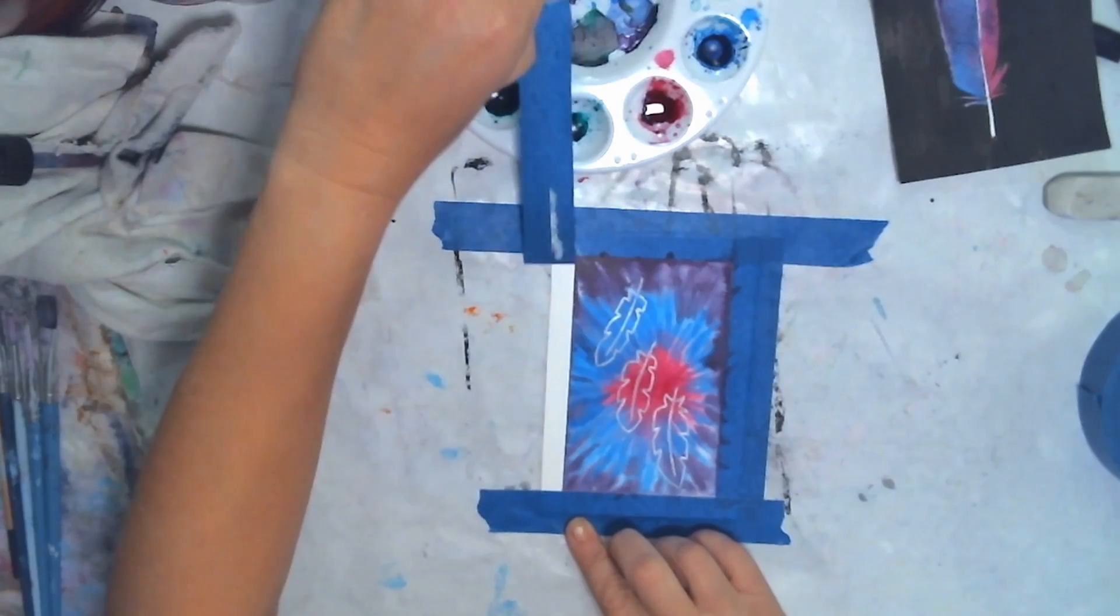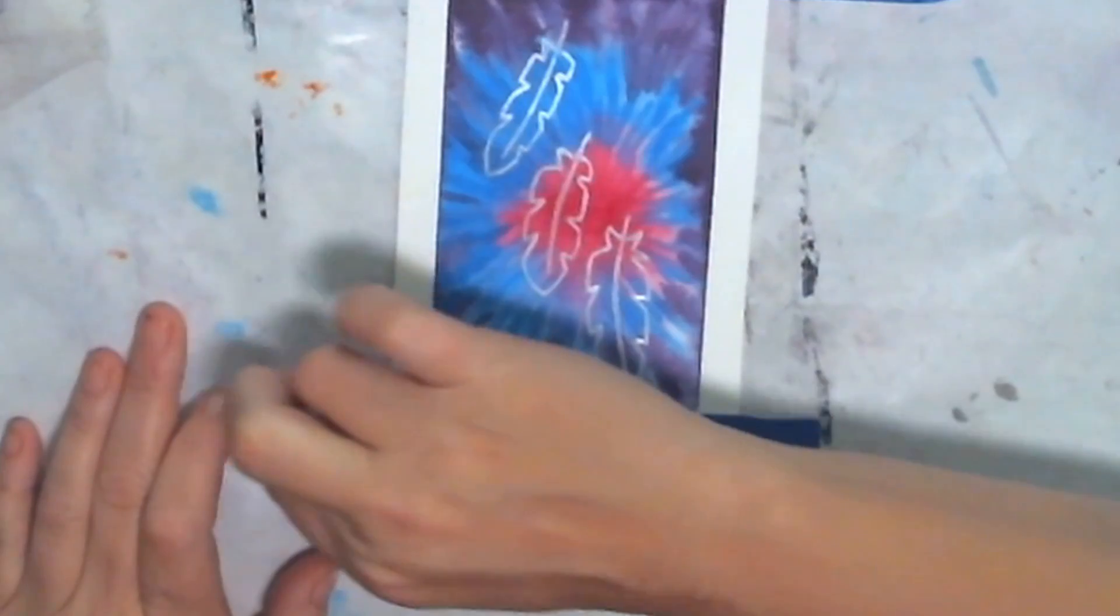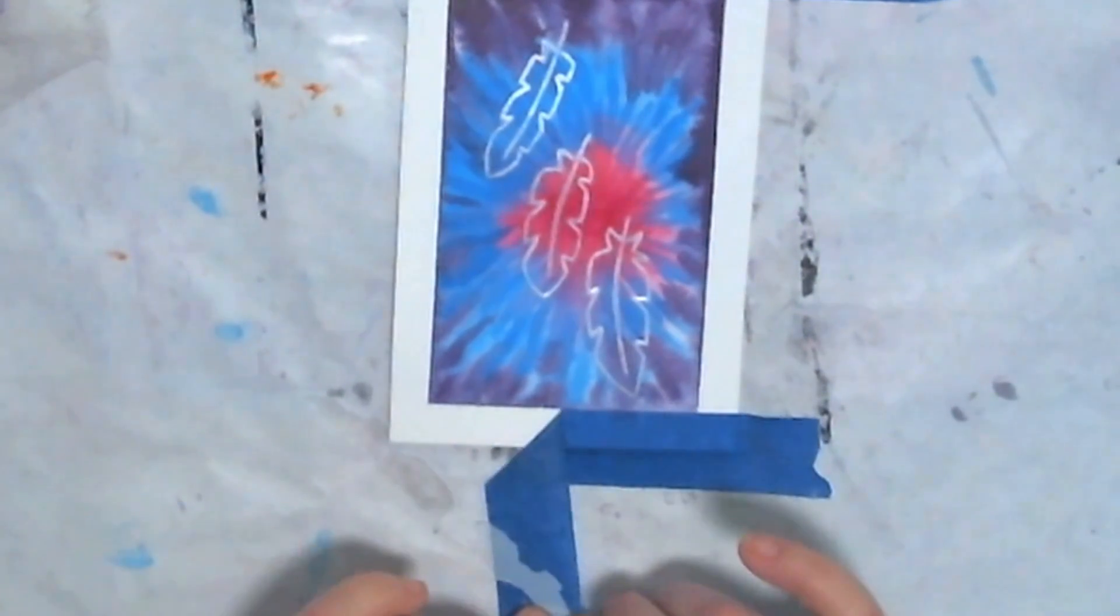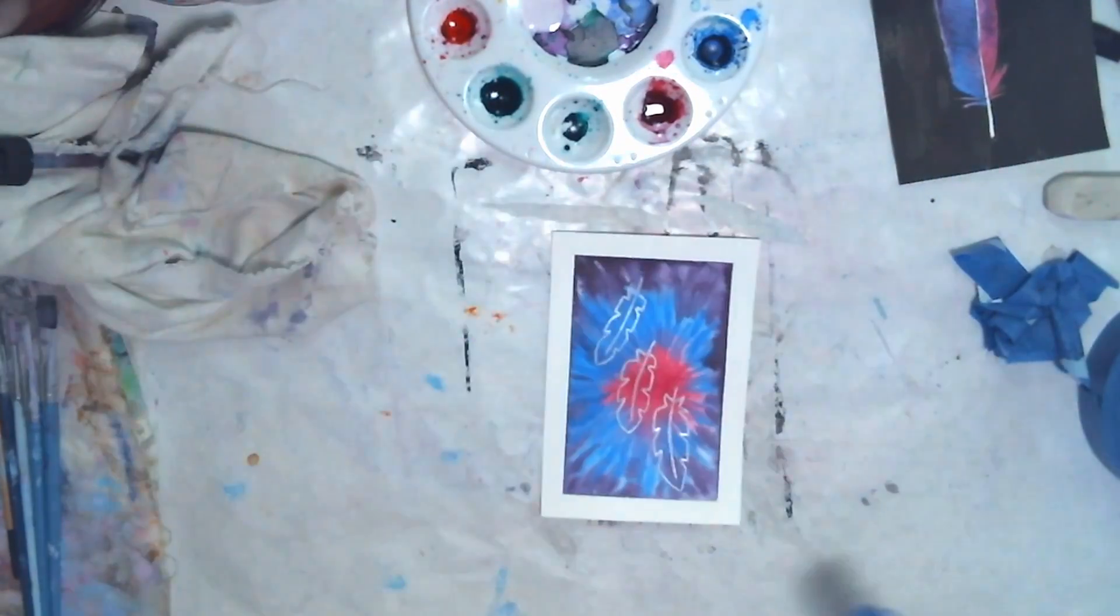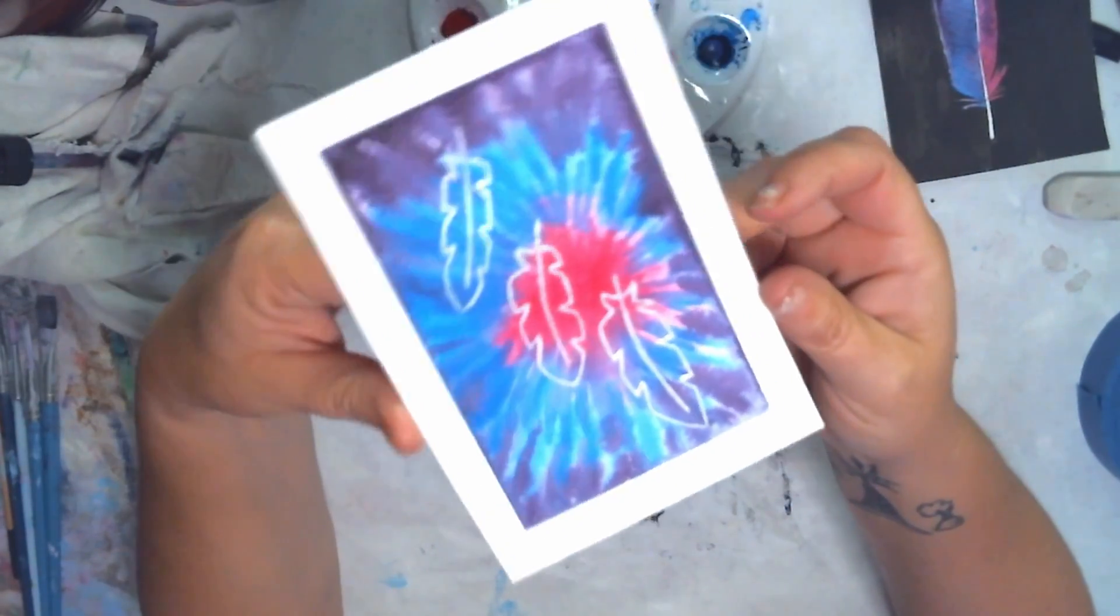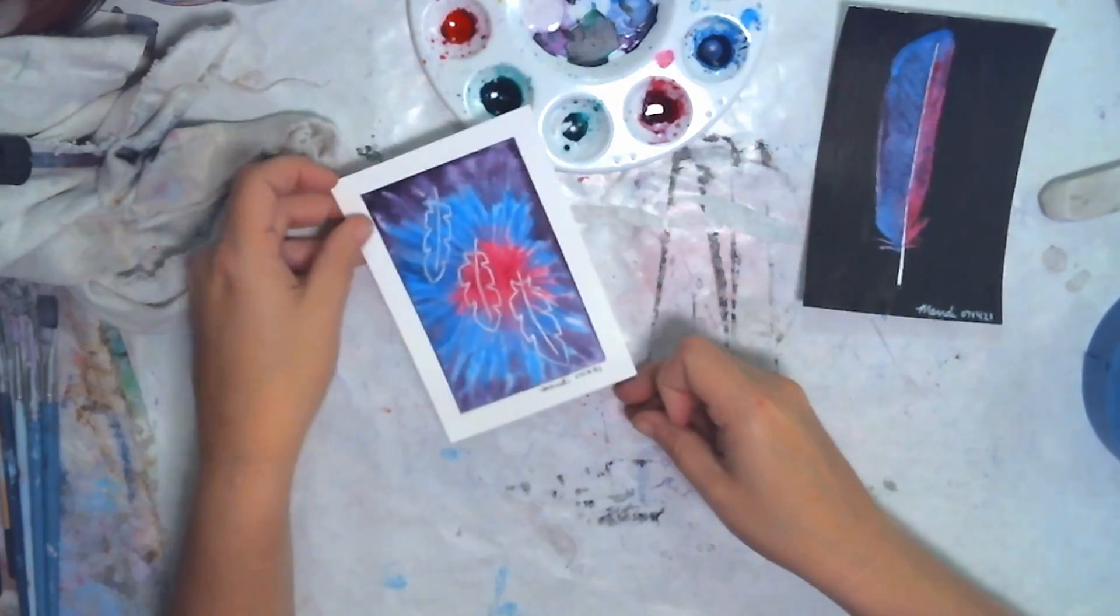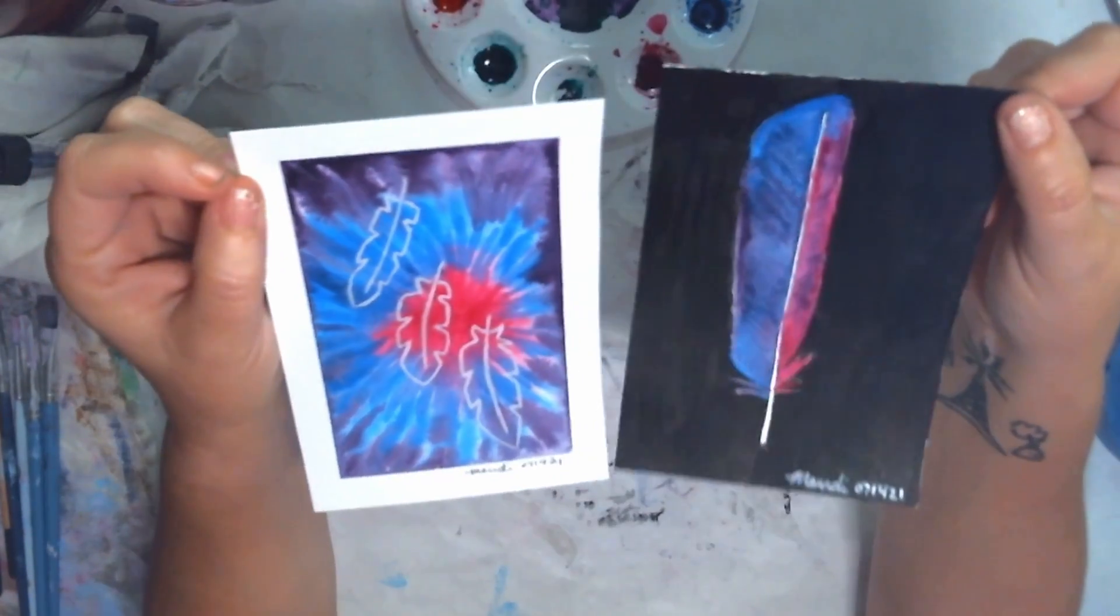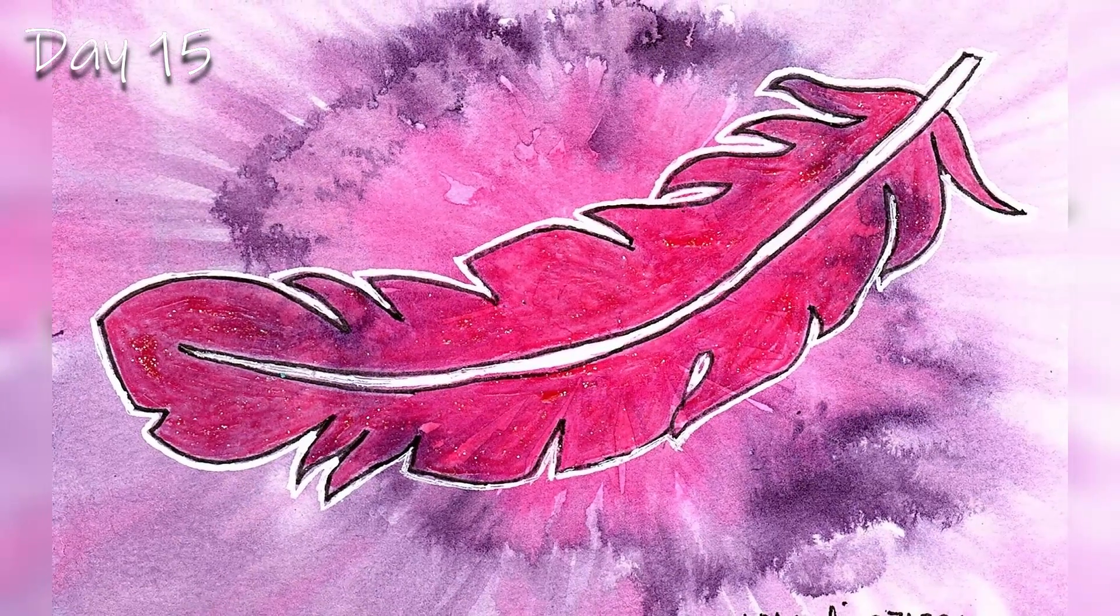Of course I put the border on crooked. All right, look at that. Sort of looks like tie dye. I do like the way this came out. So we made two today.